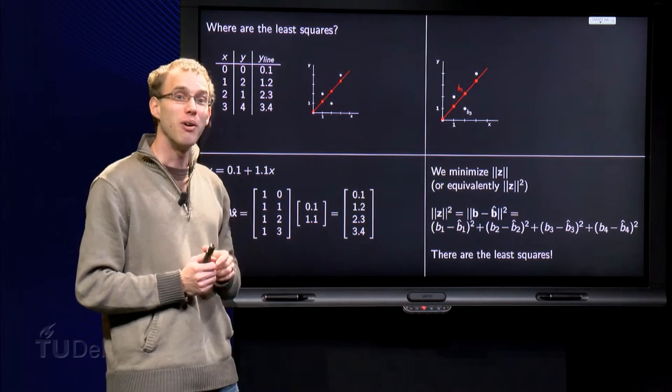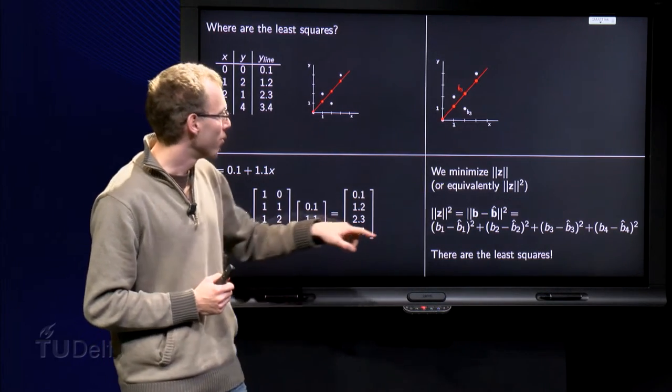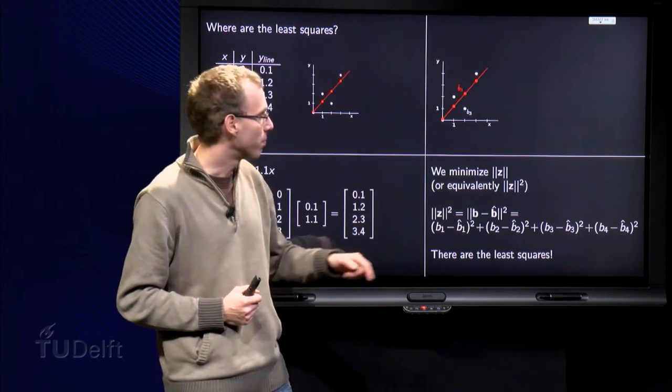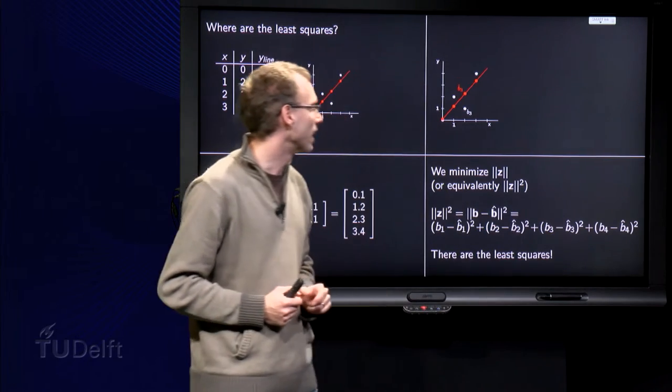But where are our least squares in the figure? Well we are minimizing for example this term is over here, b3 minus b hat 3 squared.